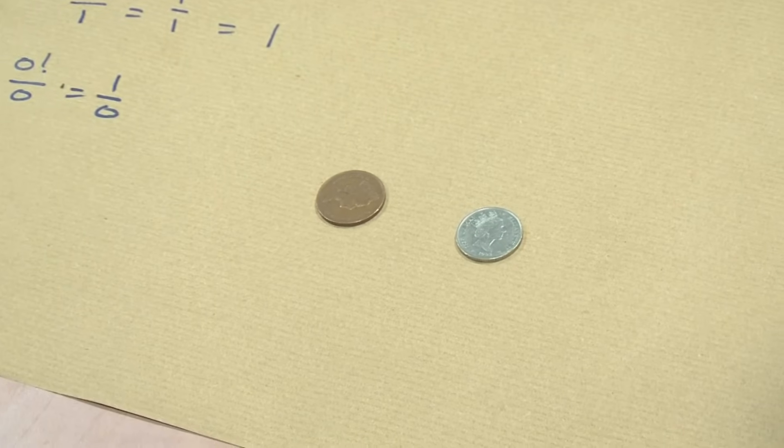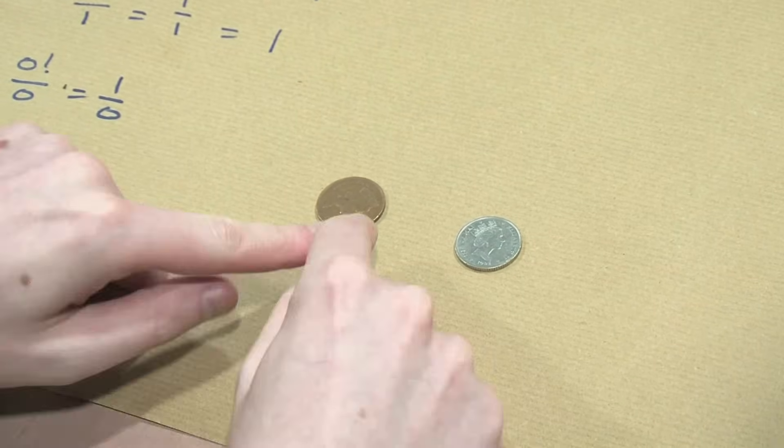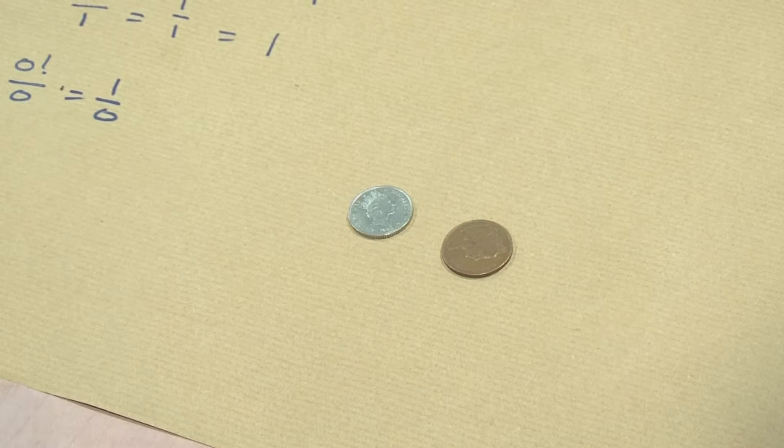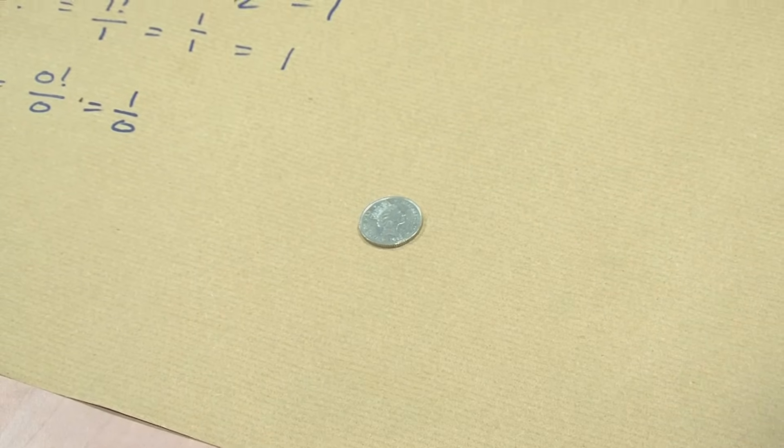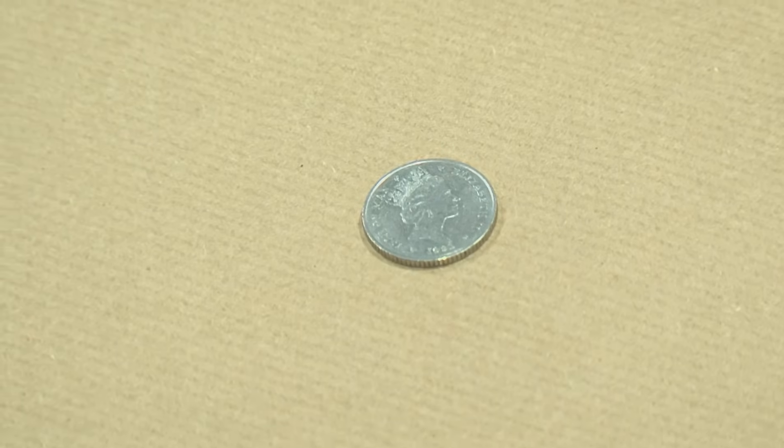If we take one away, we have now two objects. How many ways are there to arrange two objects? That's 1. That's 2. Let's take one away. How many ways are there to arrange one object? There it is. There's one way to do it. One way to arrange one object.